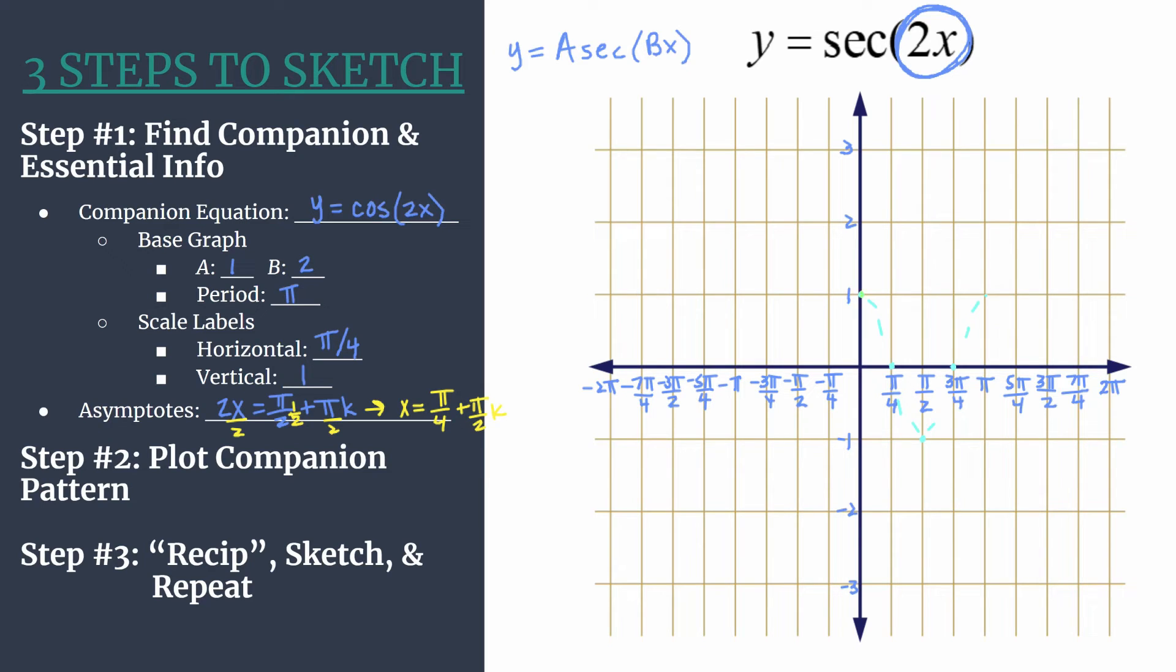So when we re-sip, the maximum here, of course, the reciprocal of one is one. But if you come along the cosine curve, the reciprocal of one half is going to be two. So it creates part of this secant curve.